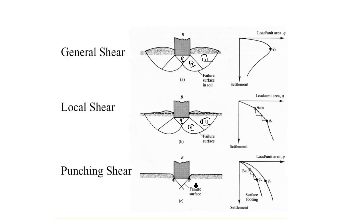In punching shear failure, there is only one zone - the wedge zone - formed beneath the footing. In this type of failure, there is penetration of the footing below the ground. On the load versus settlement curve, we get a curve in which we cannot identify an ultimate bearing capacity - the settlement keeps increasing as load is given. Also, no ground heaving is observed around the footing.